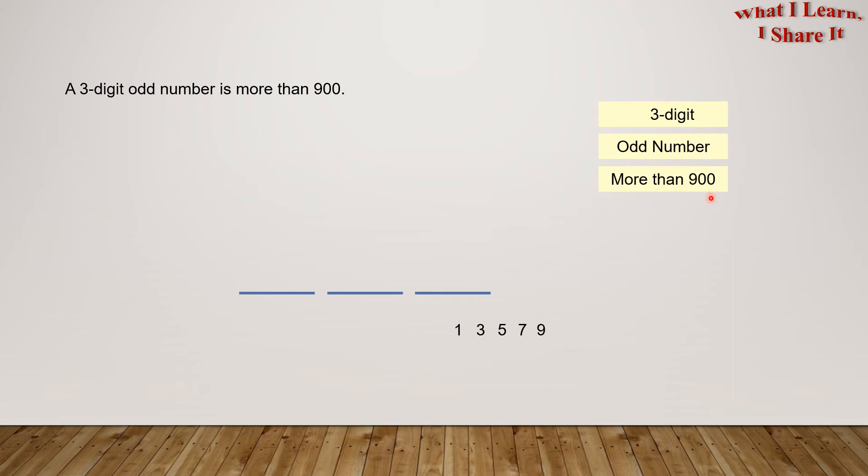And number three: This number is bigger than 900. Since nine is the biggest digit in the hundreds place, we can write nine and make sure that the overall number is bigger than 900.